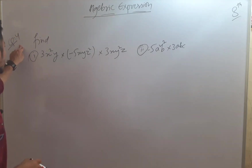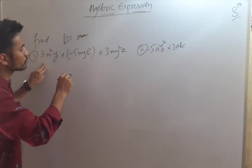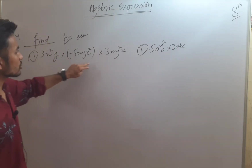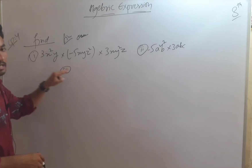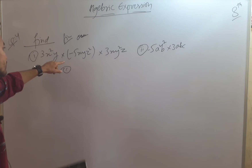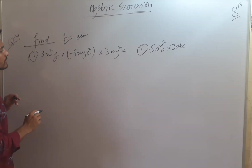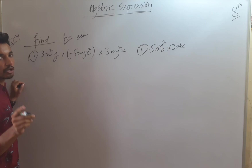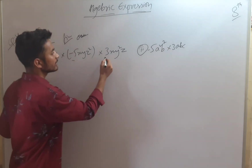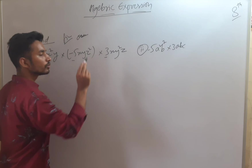Now let us look at question 4, in which we have to find the final result by multiplying all the factors. We have different variables x, y, and z — three variables. We have to multiply them separately. For 3x²y, first we multiply the constants. The constants are 3 and minus 5, then 3. So 3 into minus 5 — positive times negative — then into 3, giving minus 45 as the constant term.